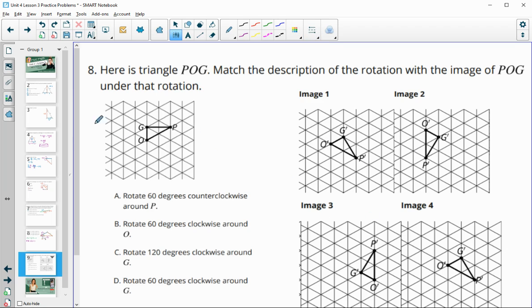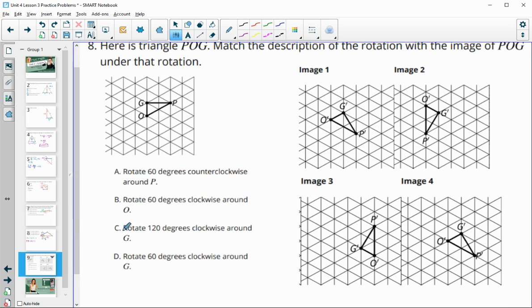So one thing I like to do in these is decide which point stays the same in each option because that's going to be your center of rotation. And in A, P stays the same. In B, O does. And then in C and D, G does. So if we can figure out which drawings keep P and O in the same, we already know them. So let's take a look here.